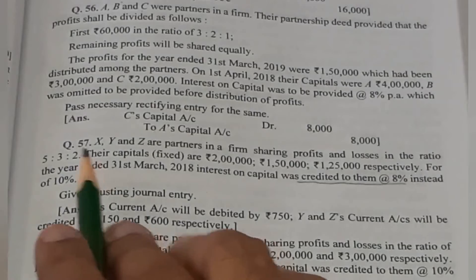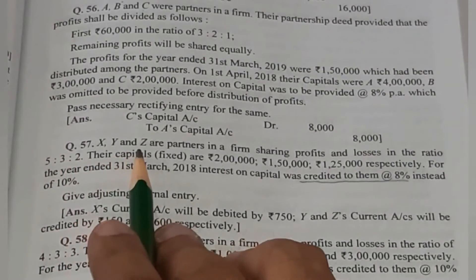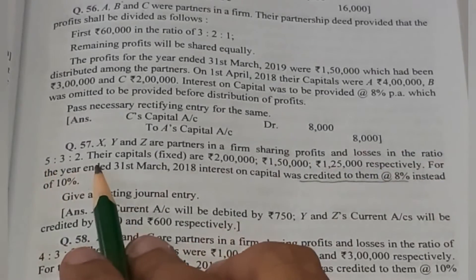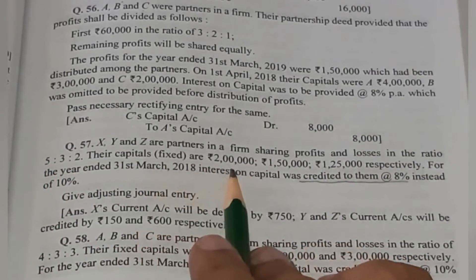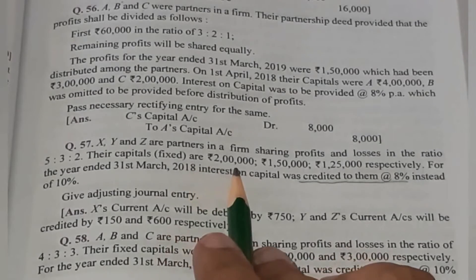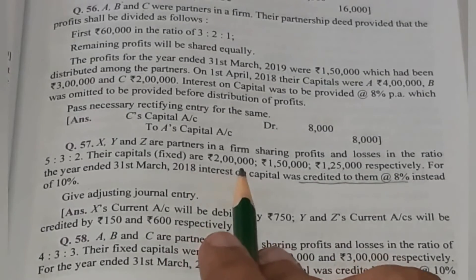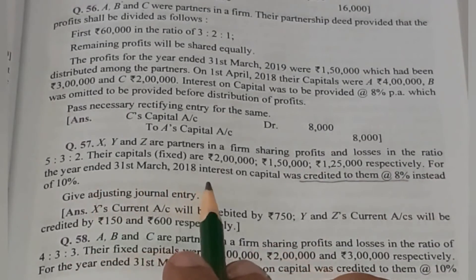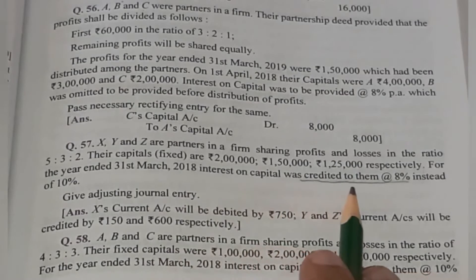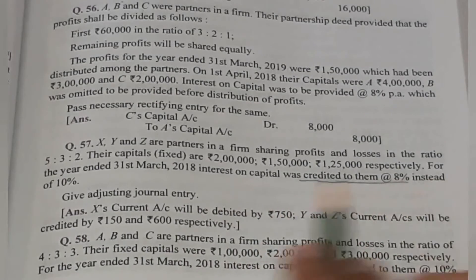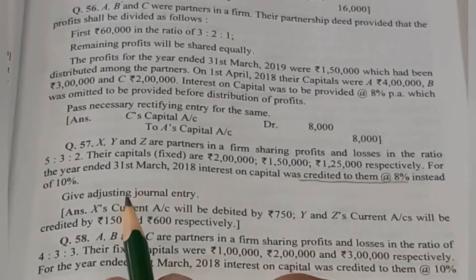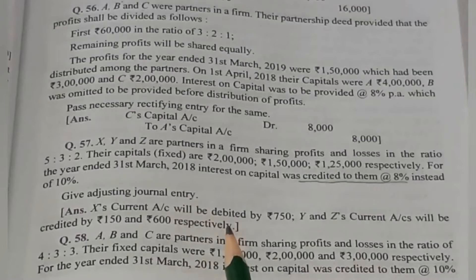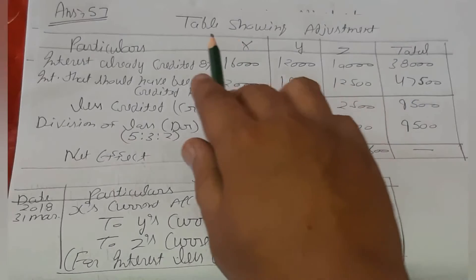Question number 57: X, Y and Z are partners in a firm sharing profit and losses in the ratio 5:3:2. Capital is fixed, तो capital की जगह current account use करना होगा। Capital 2,00,000, 1,50,000, 1,25,000। For the year ended 31st March 2018, interest on capital was credited at 8% instead of 10%। Rectification entry करनी है।